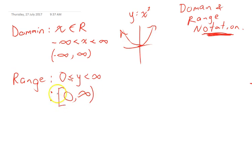The square bracket means zero is included. The curly bracket means infinity is not included.